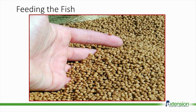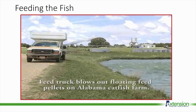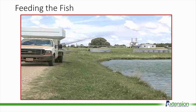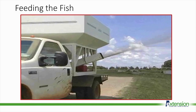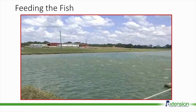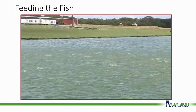Once the fish are moved to a pond, they are fed a pelleted feed. The initial feed is very small and as the fish grows, the farmer will use larger and larger pellets. Feed is distributed across the pond surface using a truck or tractor and a feed hopper with a blower. Many feed hoppers have an integrated scale and control box inside the truck so operators can manage and record how much feed is added to the pond. Distributing feed over a large area allows all sizes of fish equal access to the food.